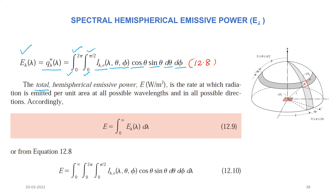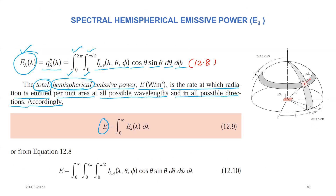Now, for the total hemispherical emissive power: 'hemispherical' means all directions and 'total' means all wavelengths. It is the rate at which radiation is emitted per unit area at all possible wavelengths and in all possible directions. To calculate total emissive power E, we integrate E_lambda with respect to lambda from 0 to infinity, covering the whole wavelength range. When we call it simply 'emissive power,' it automatically means total hemispherical emissive power.